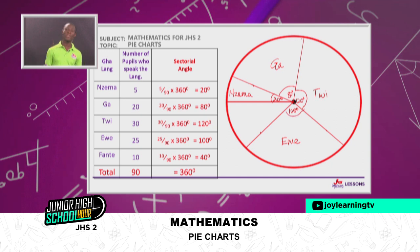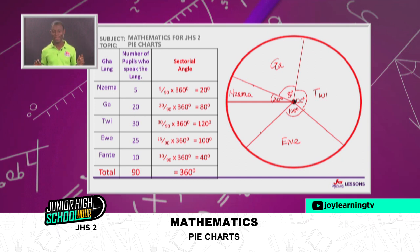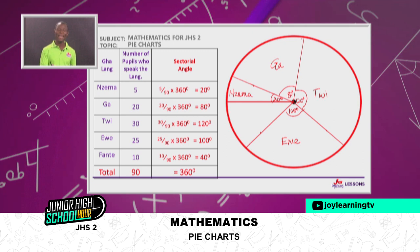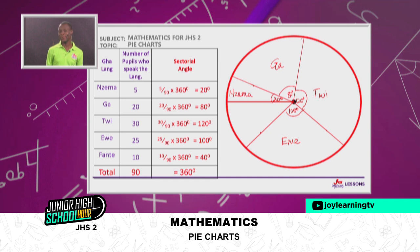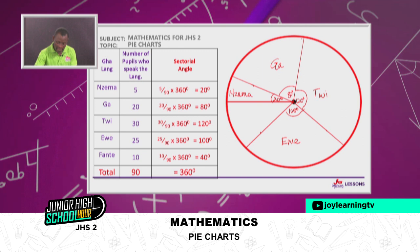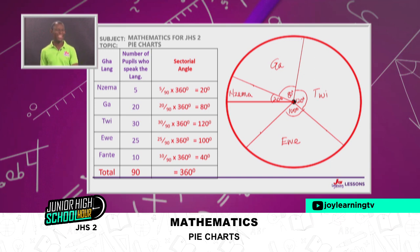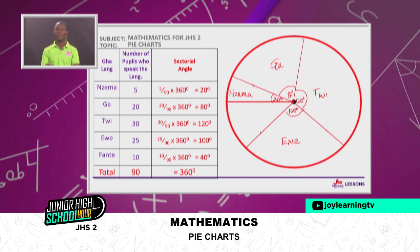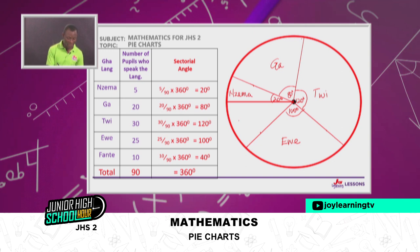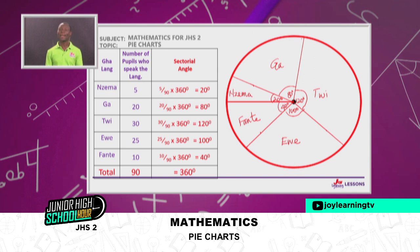I leave the last one — Fanti — and as I said, the remaining part of the circle must be exactly 40 degrees. If I measure it and it is more or less, one or two of my already-measured angles are not right. I measure mine and yes, it is exactly 40 degrees, lying perfectly on the first radius I drew. So I can be assured I have a very good pie chart. Fanti: 10 pupils, translating to 40 degrees.